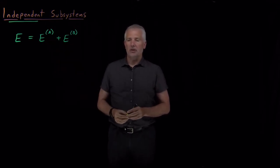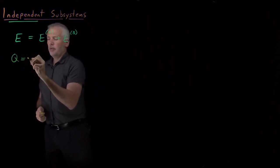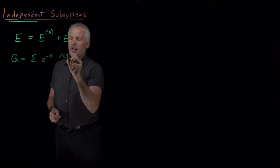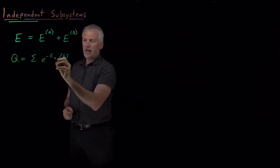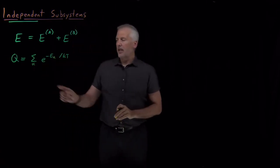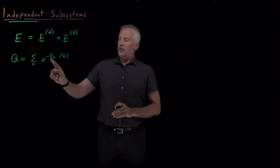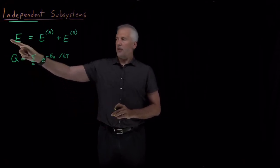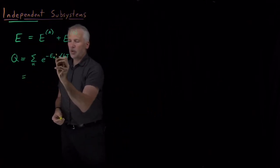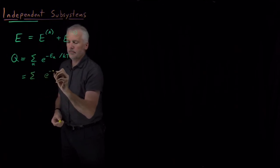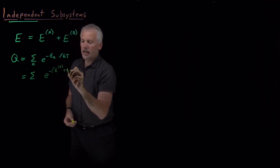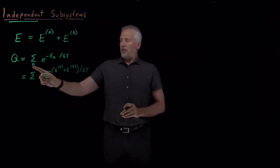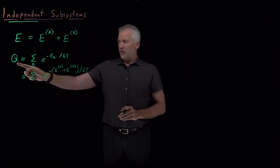What would the partition function normally be if we didn't think about breaking it up? That would just be the sum of all the Boltzmann factors, e to the minus energy over kT. Using the subscript alpha, this is the sum over all the states of the system with energies of those states over kT in the exponential with a negative sign — that gives me the partition function. But if the total energy of the system can be broken down into two parts, then we could break down this total energy into the energy of part A and the energy of part B.